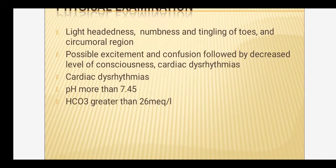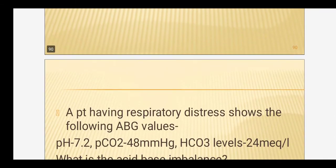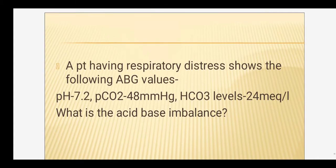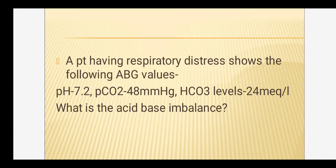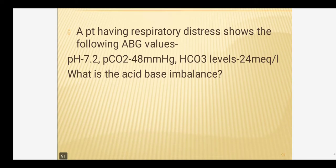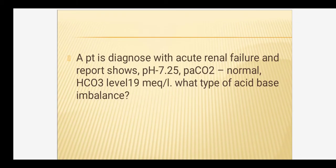This was all about acid-base imbalances. Now some practice questions — you can give your answers with rationale in the comment box. First question: a patient in respiratory distress shows pH 7.2, PaCO2 48 mmHg, HCO3 24 mEq/L — what type of acid-base imbalance is this? Second question: a patient diagnosed with acute renal failure shows pH 7.25, PaCO2 normal, HCO3 19 mEq/L — which type of acid-base imbalance is this?